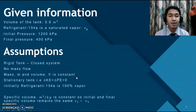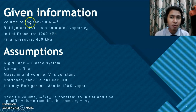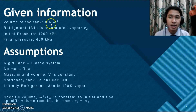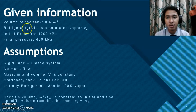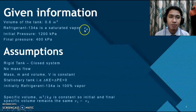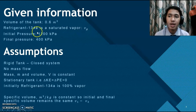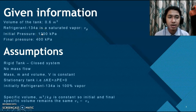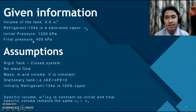Here is the given information based on the question. Firstly, the volume of the tank is 0.6 meter cube. Secondly, the substance is refrigerant 134A, which is a saturated vapor (Vg) at the start of the process. The initial pressure is 1200 kPa and the final pressure is 400 kPa.